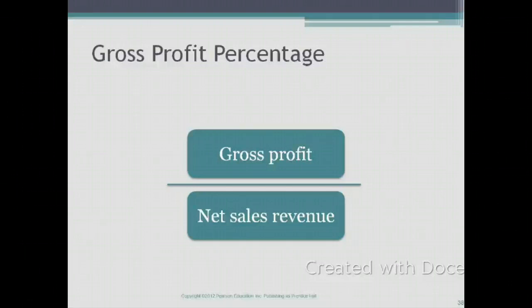Gross profit is calculated by subtracting cost of goods sold from your net sales revenue. You want the gross profit percentage to be as high as possible, to make sure that your gross profit is high enough to cover your operating expenses and still make a net income.